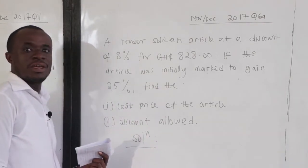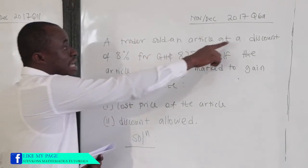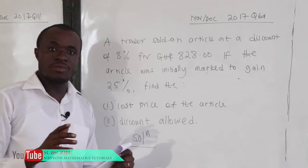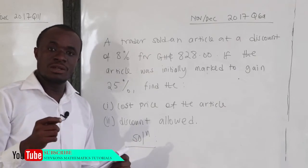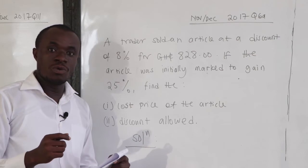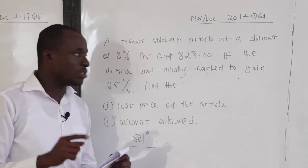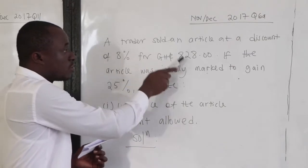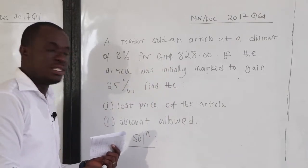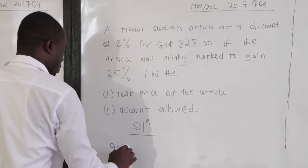We are told that a trader sold an article at a discount of eight percent. The whole thing is 100, so a discount of eight percent means it has been reduced by eight. What we are going to get is 100 minus 8, which is 92. It means that 92 percent is corresponding to 828 cedis.